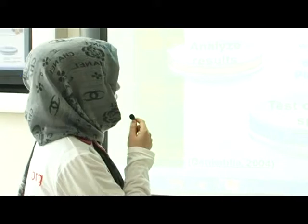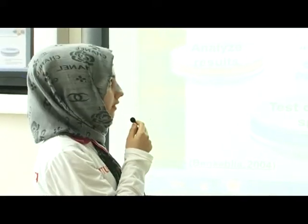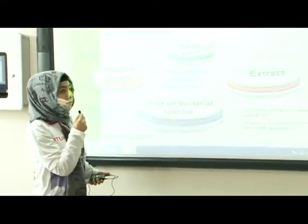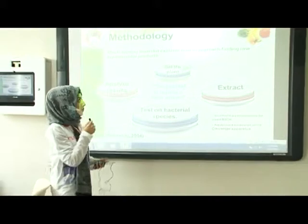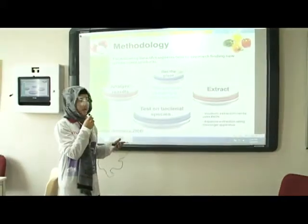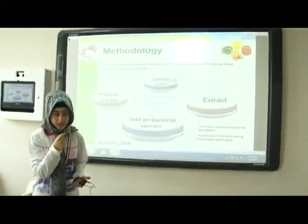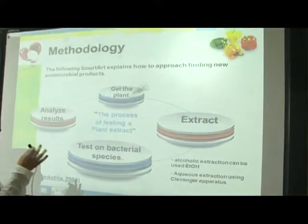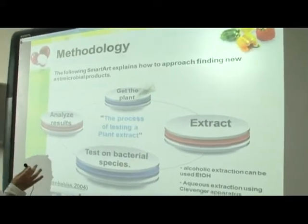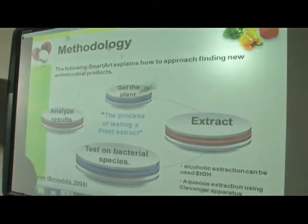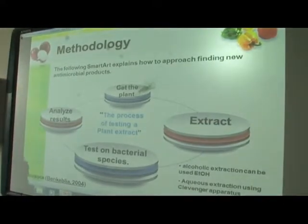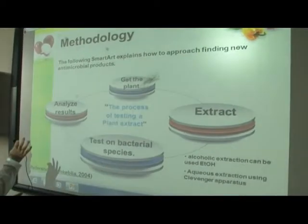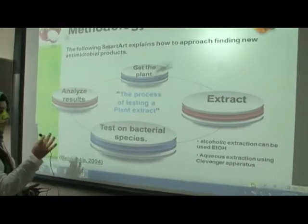First of all, we have to know that MAR-R explains how to approach finding new antimicrobial products. For that, we get the plant, which is onion, and we extract it. After that, we test the bacterial species, which is Staphylococcus aureus, and then analyze the results.